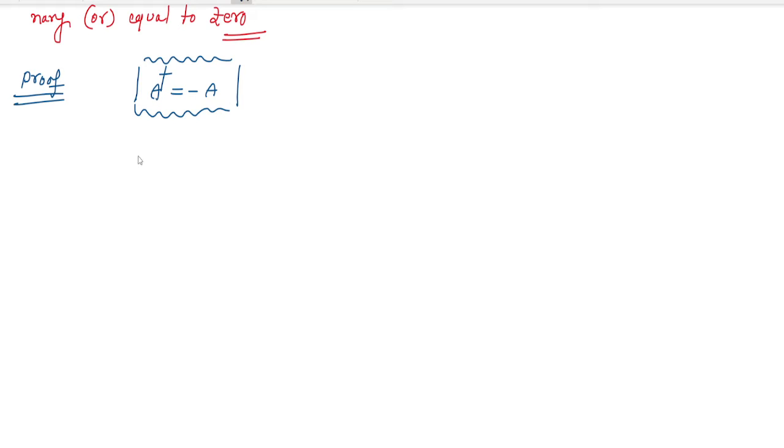So here I'm taking an operator â and applying this operator on a wave function. It gives the same wave function multiplied by some constant value. I'm going to multiply this equation by bra vector ⟨ψₘ|.